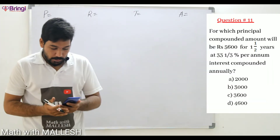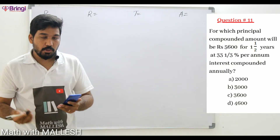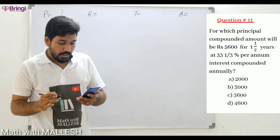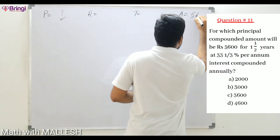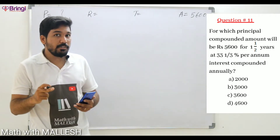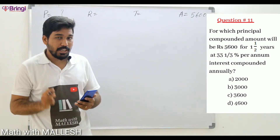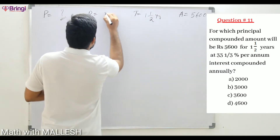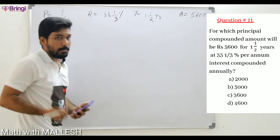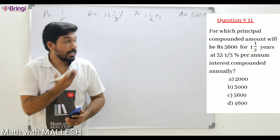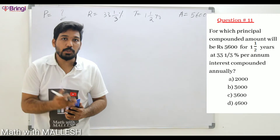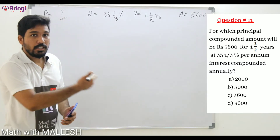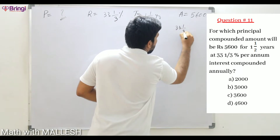Question number 11: For which principal will the compounded amount be 5600? Here, the question mark is the principal; the compounded amount will be 5600. They clearly said the amount became 5600 and we have to find what the principal is, under the conditions for one and a half years at 33⅓ percentage. Notice the time period pattern was changed — before it was 2 years, 3 years, but now it is converted to one and a half years.